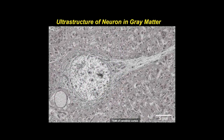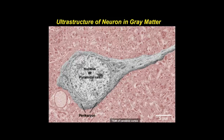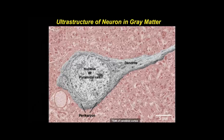The cell body, or soma, of a neuron contains a large spherical euchromatic nucleus surrounded by cytoplasm, or perikaryon. Seen to the right is a dendrite projecting from the soma. Surrounding the neuron are tightly packed neuron processes and parts of glial cells, collectively termed neuropil. A capillary is seen adjacent to the soma.